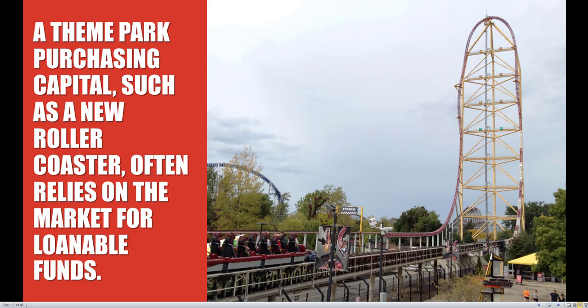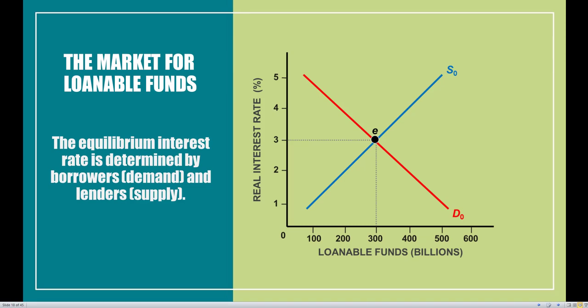A firm purchasing capital such as a new roller coaster often relies on the market for loanable funds — an example of firms and corporations demanding money to undertake a particular project. In the supply and demand model, interest rates, typically denoted with a lowercase r in economics, go on the vertical axis, and the quantity of loanable funds goes on the horizontal axis. The intersection of supply and demand gives us our equilibrium interest rate of 3% and an equilibrium amount of funds of $300 billion.